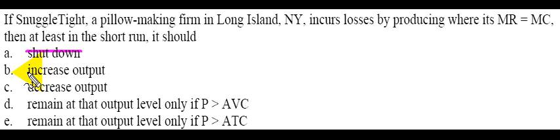B, increase output. Well, if it's already producing where MR is equal to MC, we wouldn't want to do that. And for the same reason, we also wouldn't want to decrease output. So our output level is probably optimal.